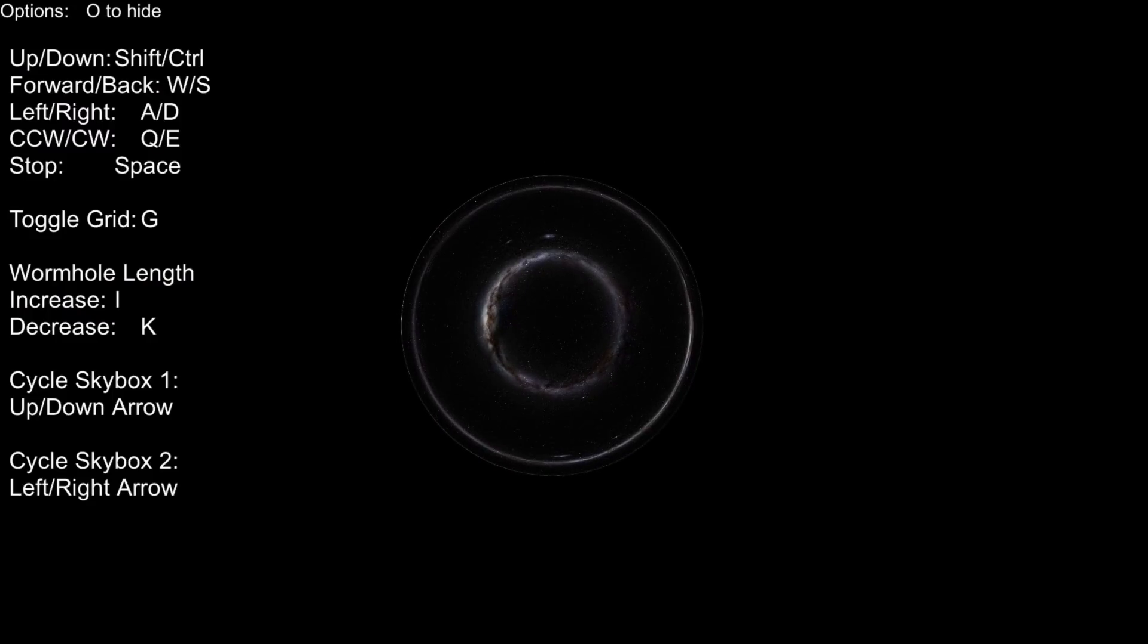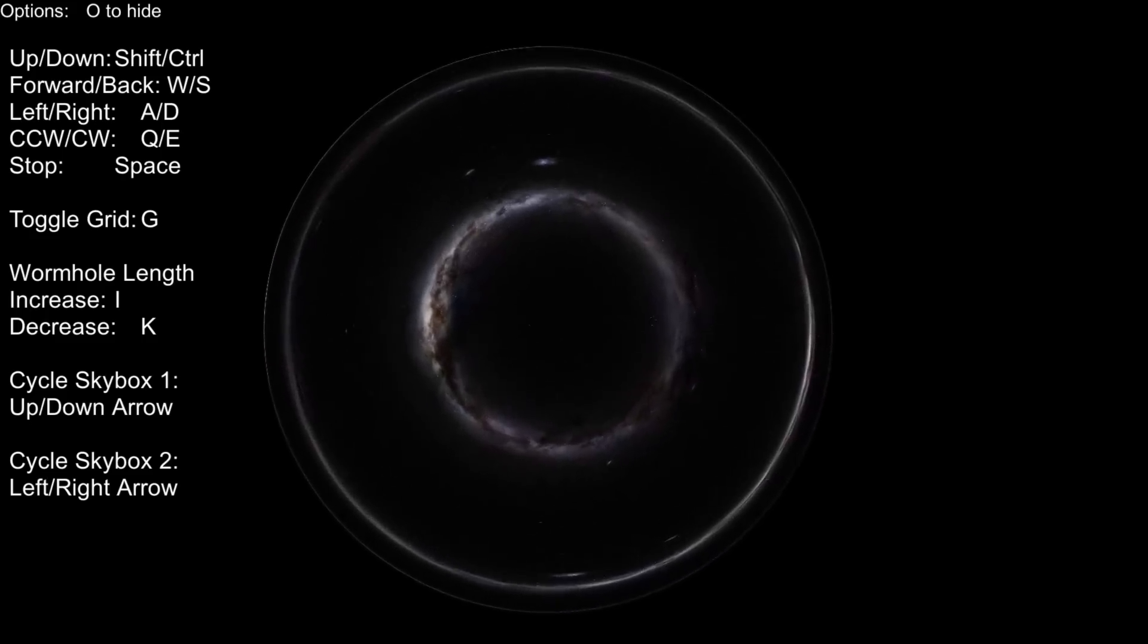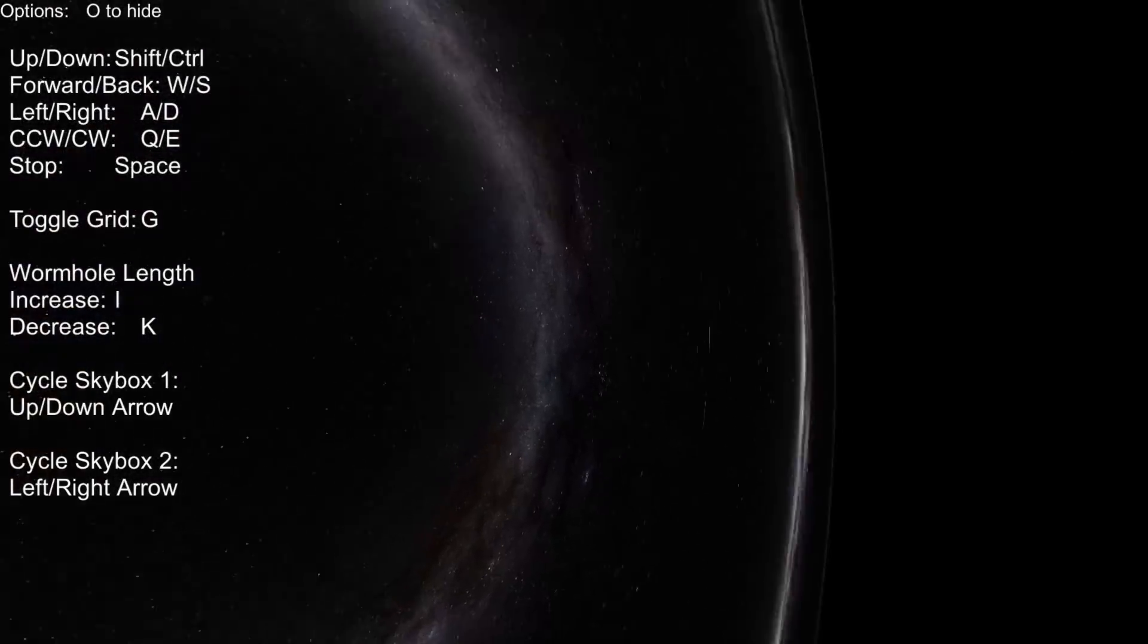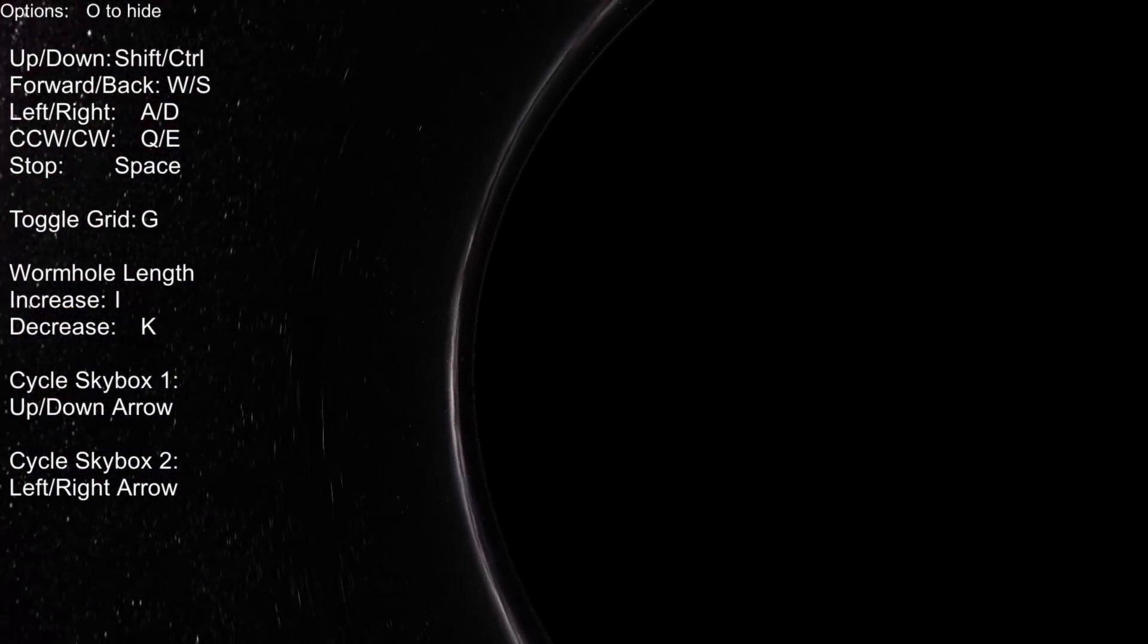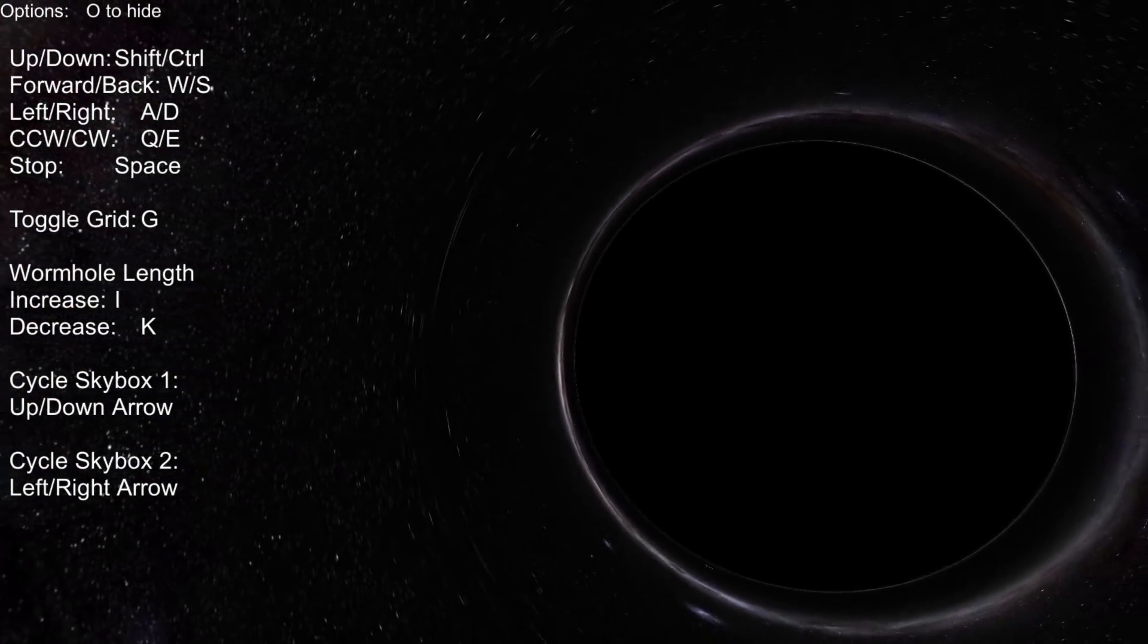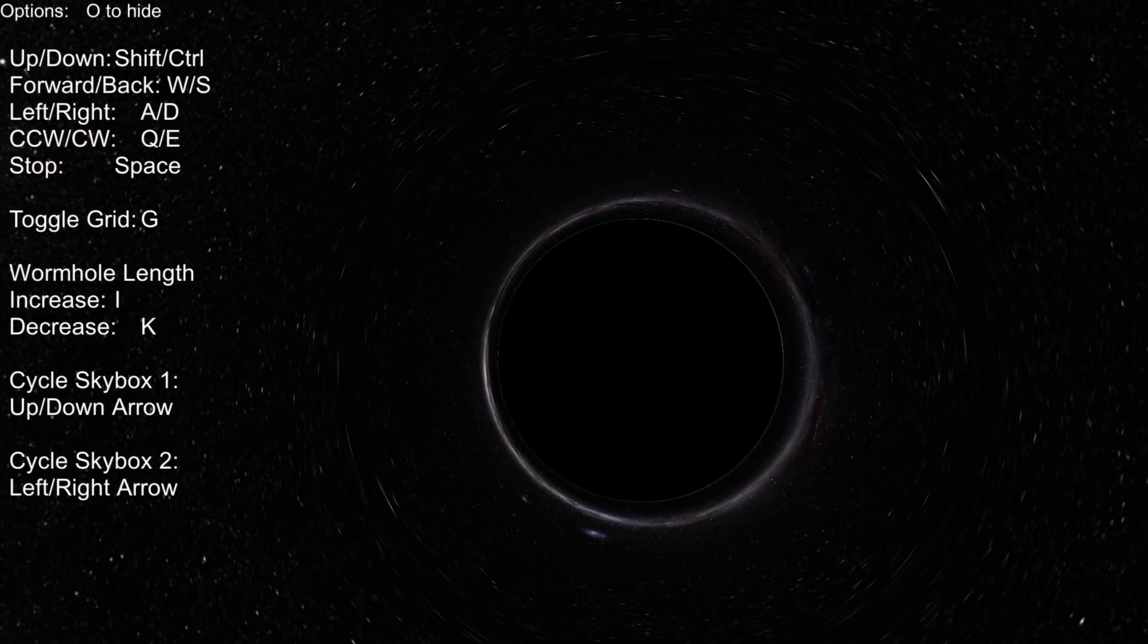And that's the entire skybox visible all at once because of the way that light funnels in and spirals into the black hole. But you didn't click on this video to see what it looks like spiraling into a black hole. You want to know what it's like spiraling into a wormhole. So we're going to turn on the other skybox.